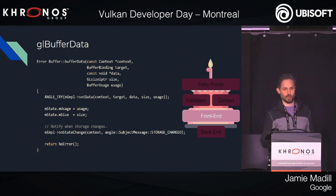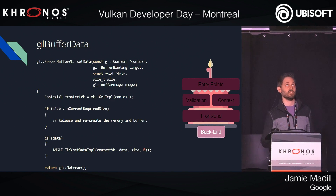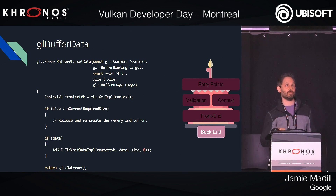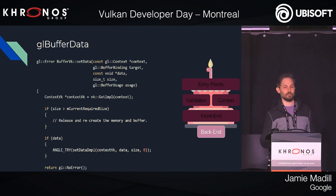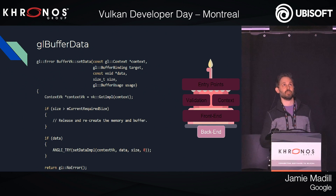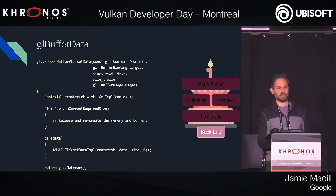And this is the Vulkan backend — a simplified version with the Vulkan boilerplate removed so it fits on a slide. All it's doing is checking if it needs to recreate the store, then it would call Vulkan. And if there's data passed in, it would also call Vulkan to update the data. Hopefully you can see ANGLE is not a monster when it comes to understanding code.